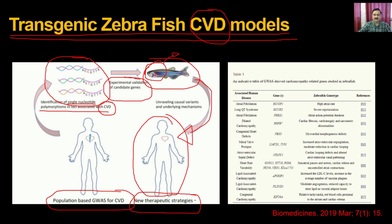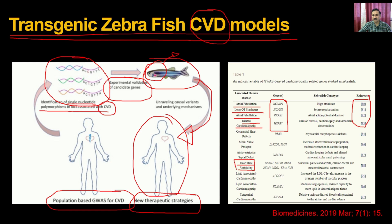Various zebrafish models exist for conditions such as atrial fibrillation, syndromes, atrial dilation, and cardiomyopathy. Specific genes have been used to develop different disease models, including models to study heart rate variability, which is a serious clinical concern. Results from these zebrafish genotype studies help researchers understand the role of these genes in cardiovascular function.